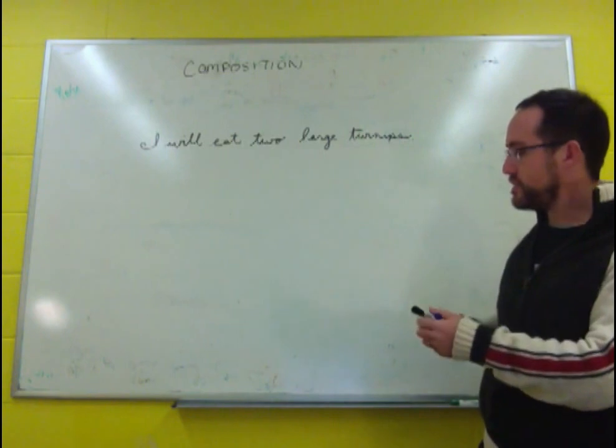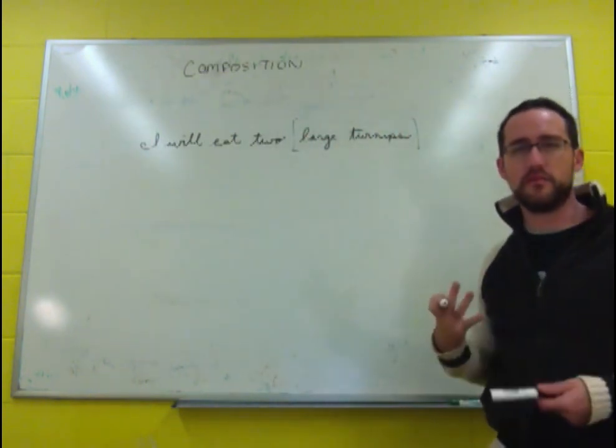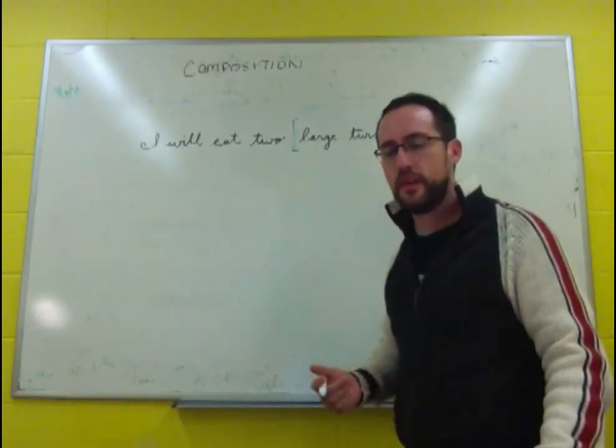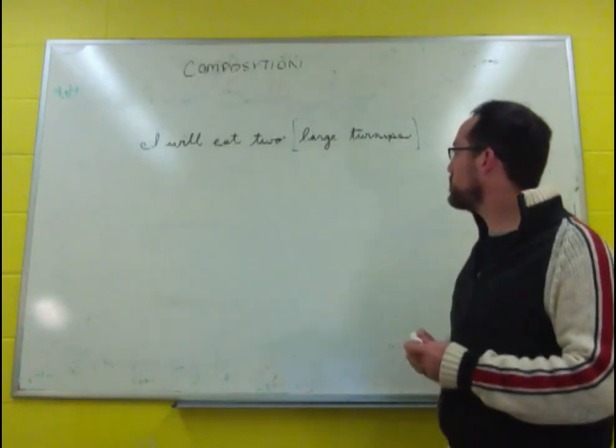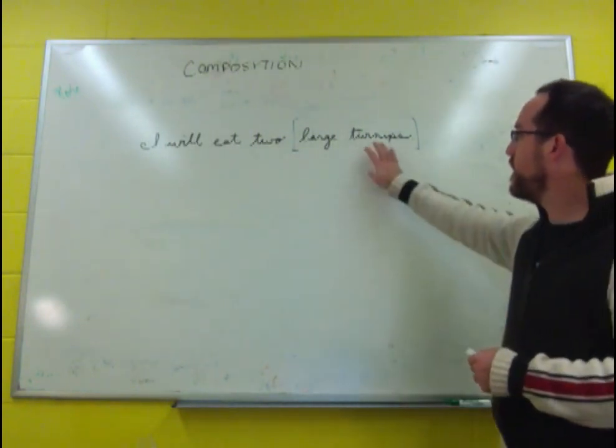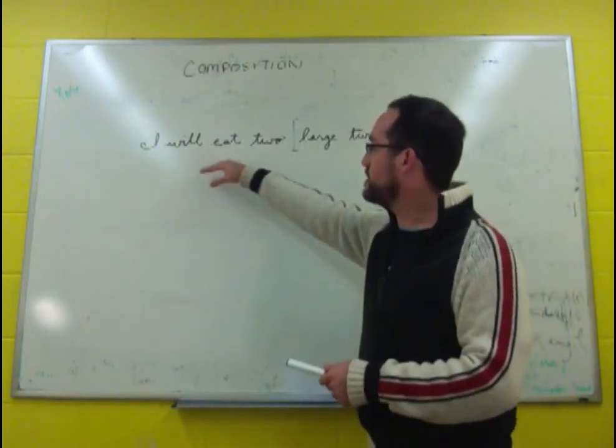One thing we need to understand as semanticists is the mechanisms by which these meanings combine. We can tell that large and turnips go together. There's a difference between large turnips and turnips, truth conditionally. We can build a meaning out of those, and what we want to understand is how those meanings combine, the same for to and then eat and so forth.